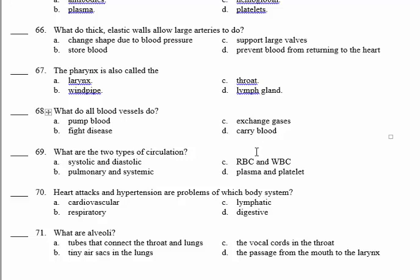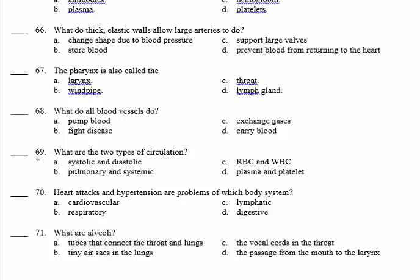Number 69: what are the two types of circulation? Pulmonary, which carries blood to the lungs, and systemic, which carries blood to the systems. 69, B.